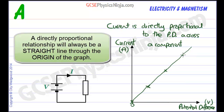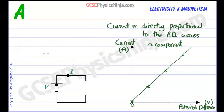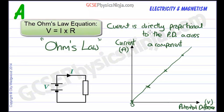So this is a straight line, directly proportional. Now this is actually a law and it's called Ohm's Law. Ohm's Law says that the current that flows is directly proportional to the potential difference or the voltage across the component.